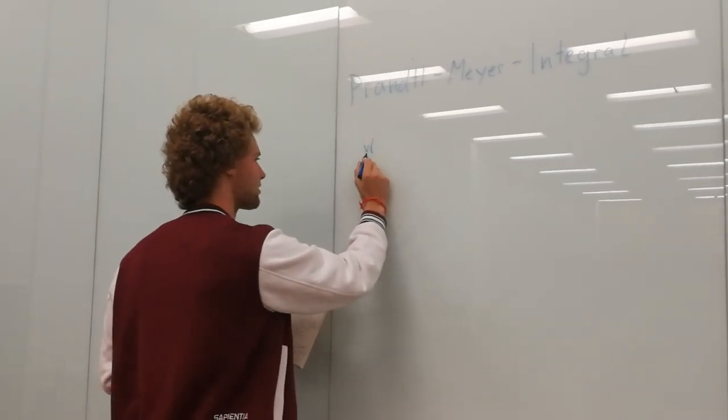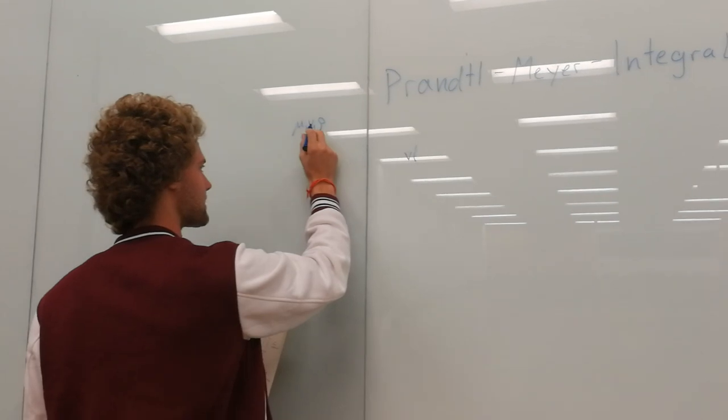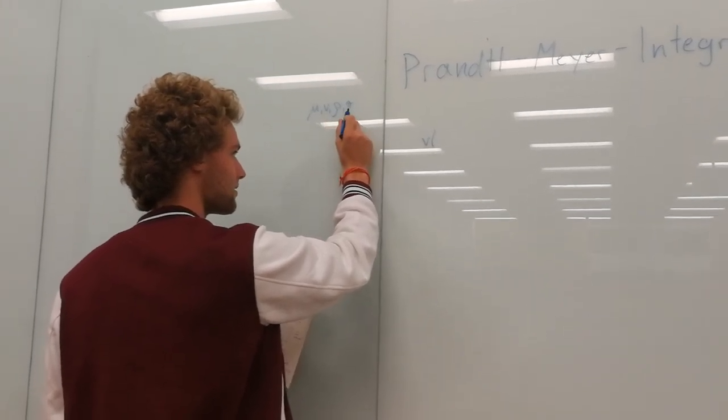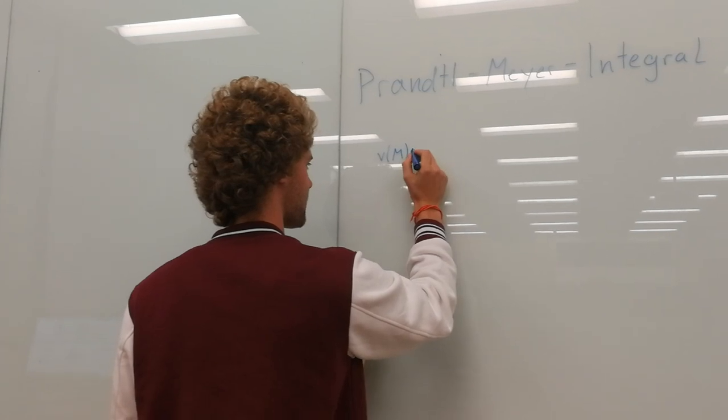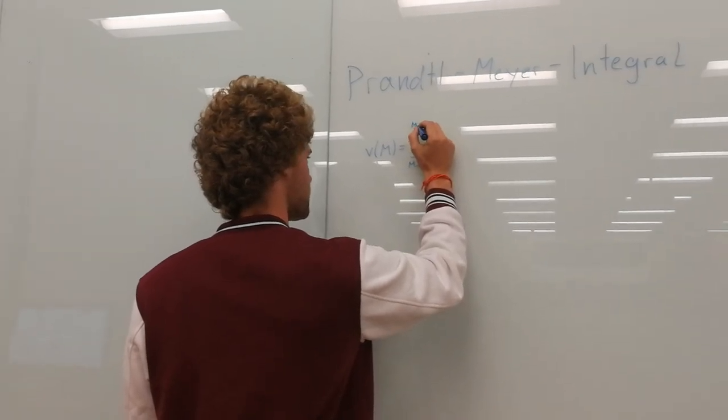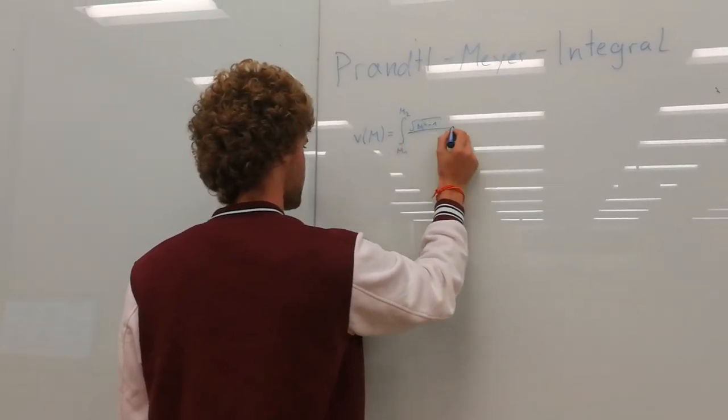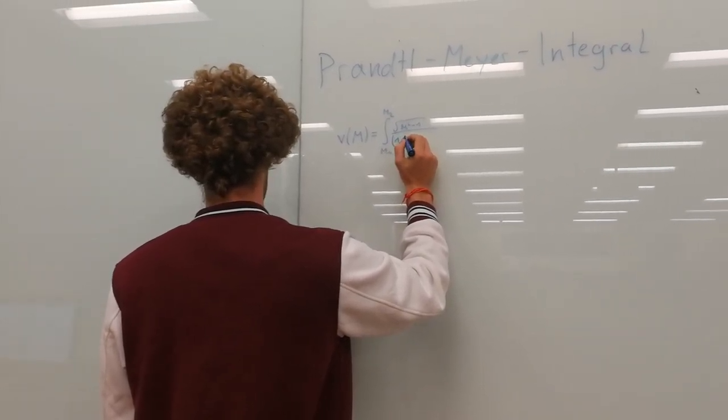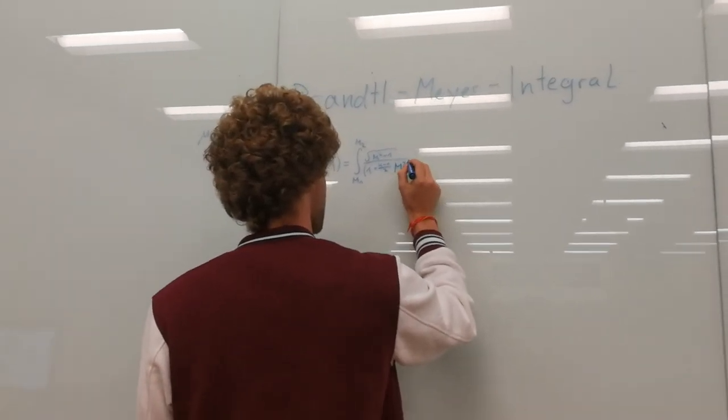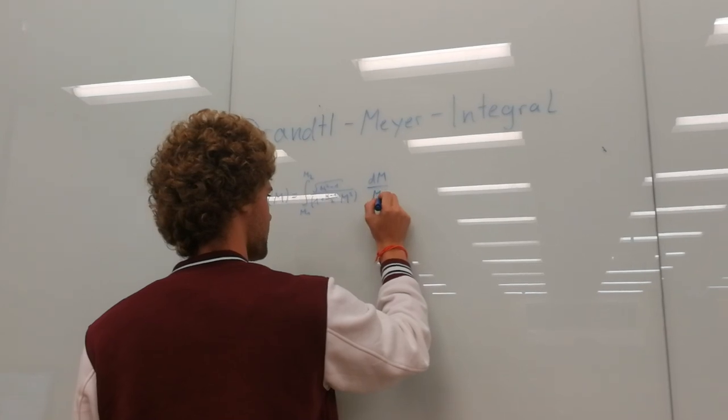So this is nu, the Greek letter for m. There's mu, nu, rho, this is r, this is n, this is m. And then there's pi, that's like the p, so this is not p, this is r, this is p. So nu of m equals the integral from m1 to m2 of the square root of m squared minus 1 over 1 plus kappa minus 1 over 2 times m squared, integrated with respect to m over m.